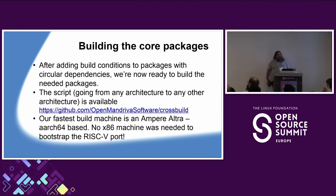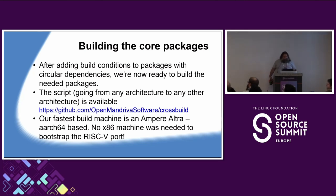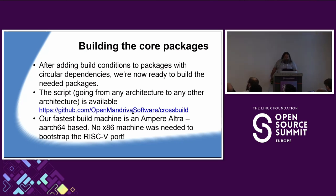Now that all the packages have been modified to not have circular dependencies, we can go ahead and build the core packages with the right build conditions set. We have a script that does this for OpenMandriva — I've put the link here instead of showing the entire thing, so you can look at what order we're building packages in and what features we're disabling. An interesting fun fact: our fastest build machine is actually an Ampere Altra, which is an AArch64 machine — so in bootstrapping our RISC-V port, no x86 machine was involved at all.